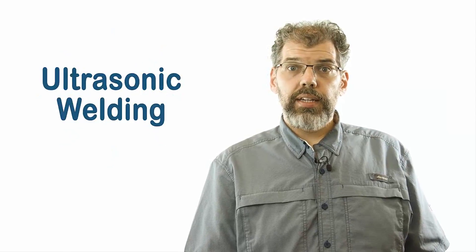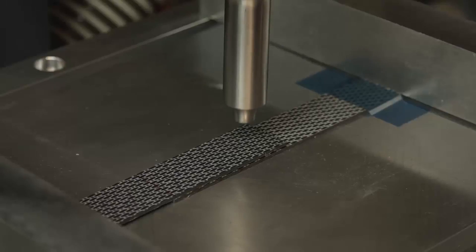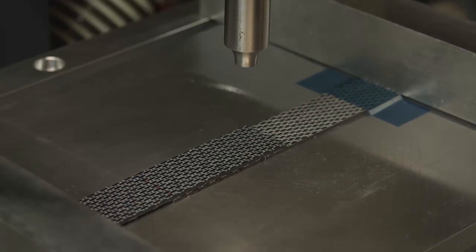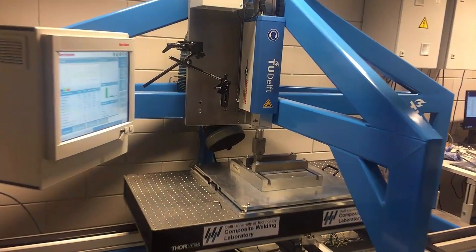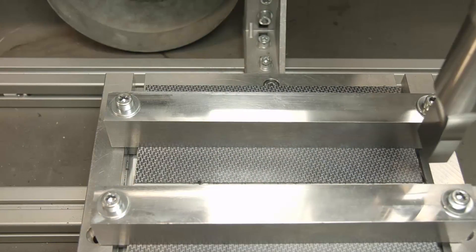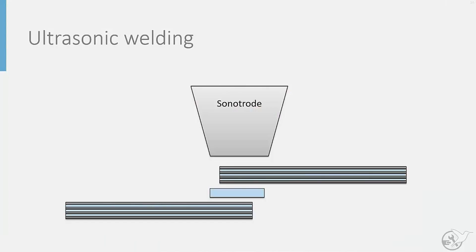The third technique that can be applied is ultrasonic welding. A huge advantage of ultrasonic welding is the speed at which this process occurs. Welding times can be measured in seconds rather than minutes as with the previous two welding methods. Unlike the previous two methods, ultrasonic welding does not rely on electrical currents to generate heat. Instead, a thin layer of resin is used as a heat generator.